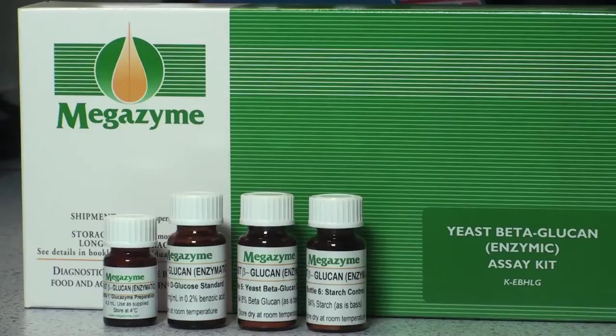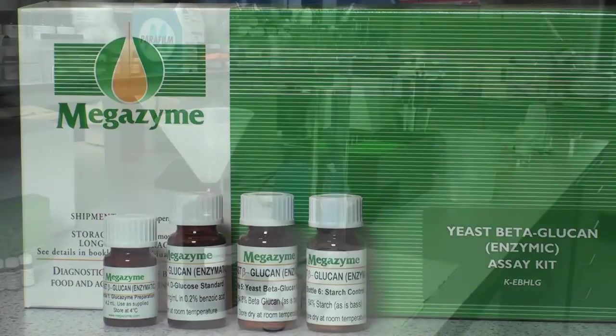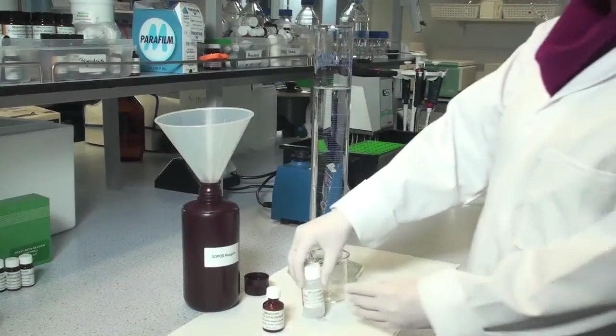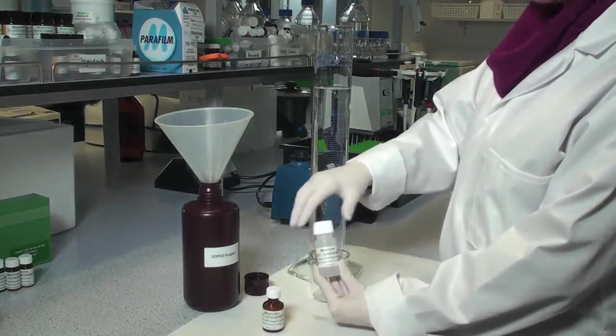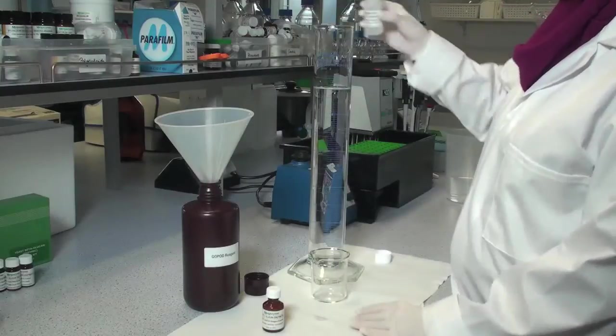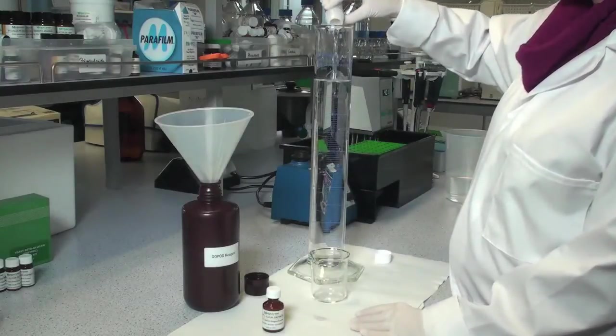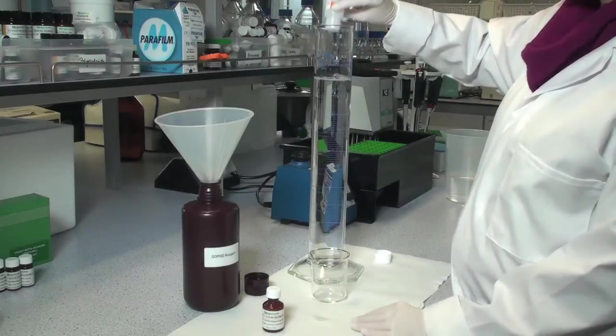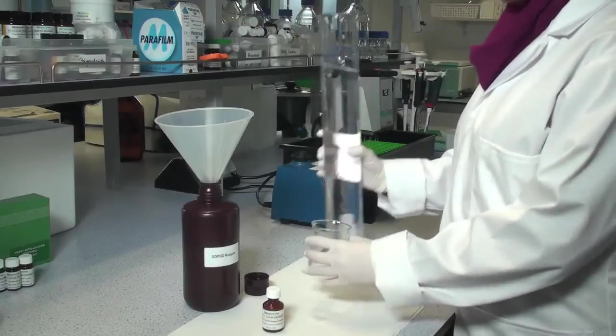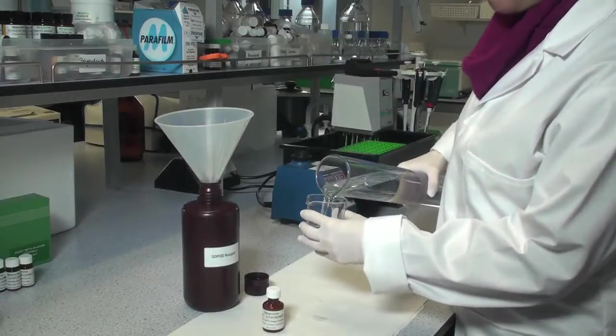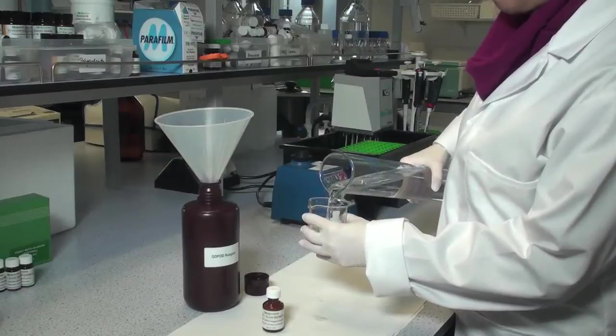Use the contents of bottles 1, 4, 5, and 6 as supplied. Dilute the contents of bottle 2 to 1 liter with distilled water. Transfer some of this solution to a small beaker and use this to dissolve the contents of bottle 3.